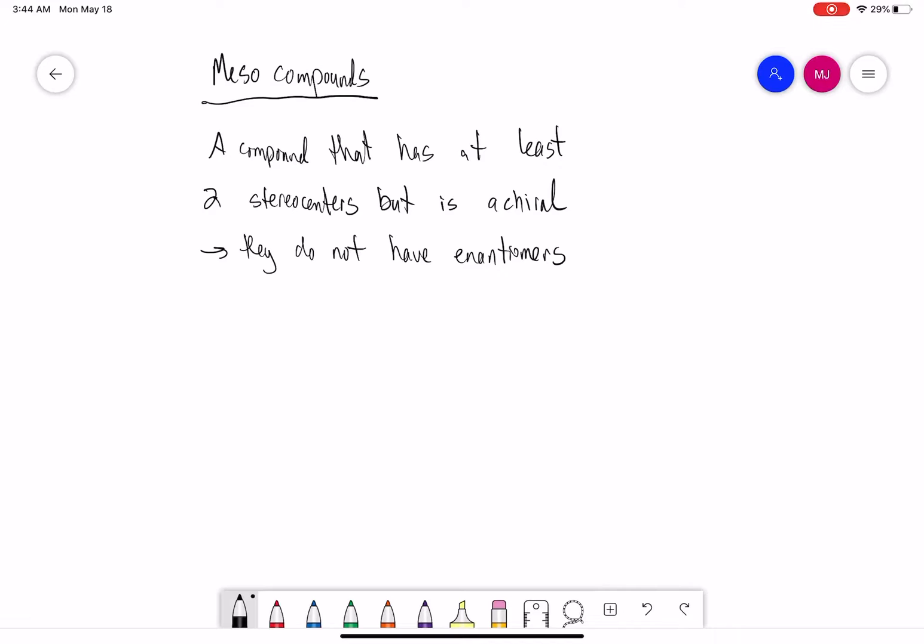In this video we're going to learn about meso compounds. Meso compounds are compounds that have at least two stereocenters but are achiral. They do not have enantiomers, and it turns out that these molecules are highly symmetric.